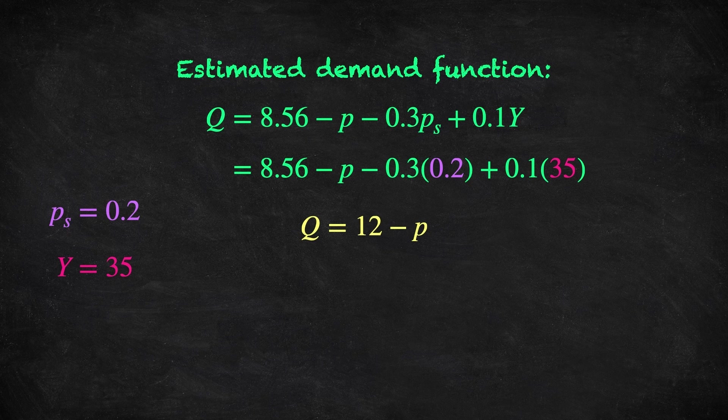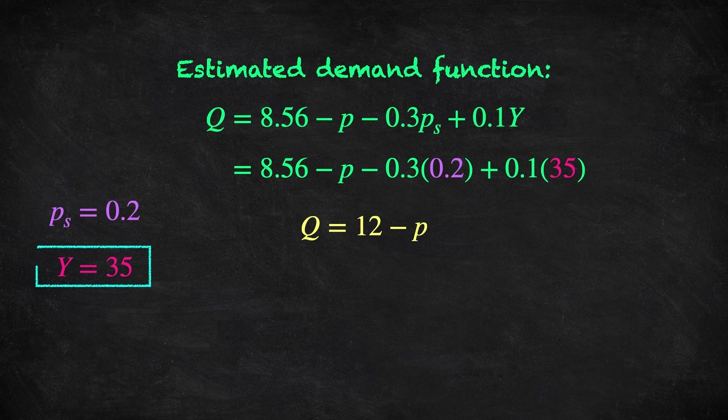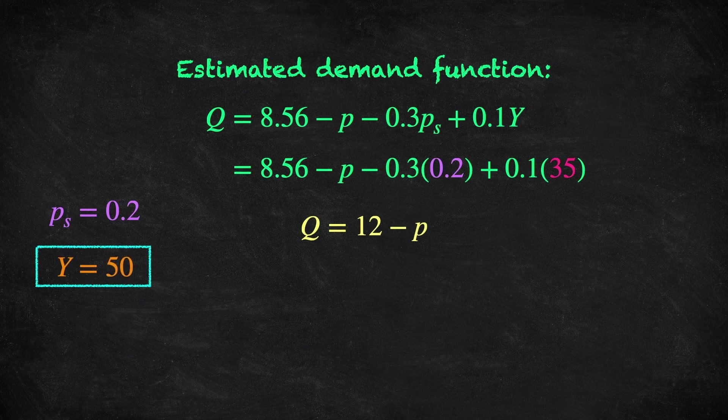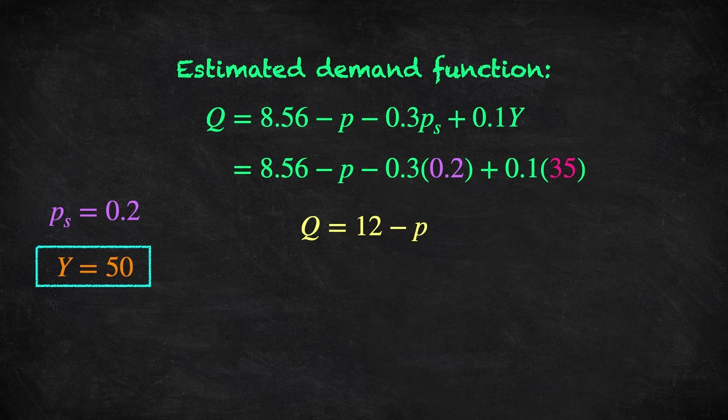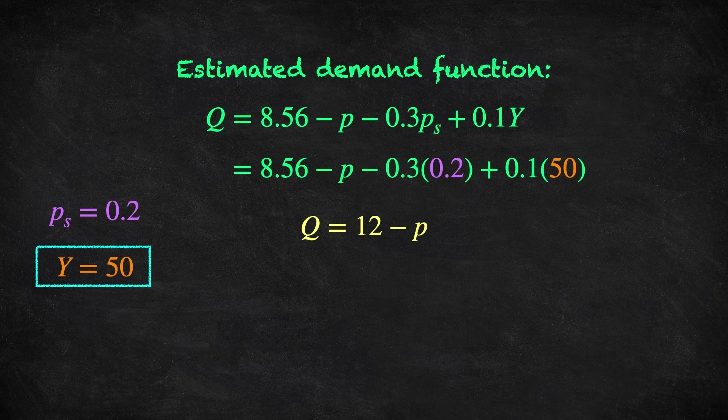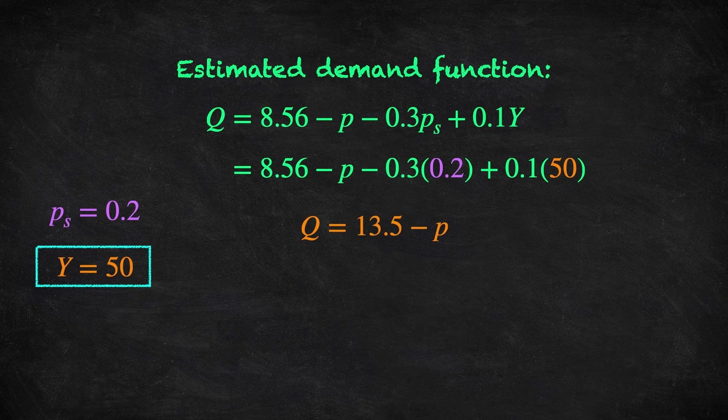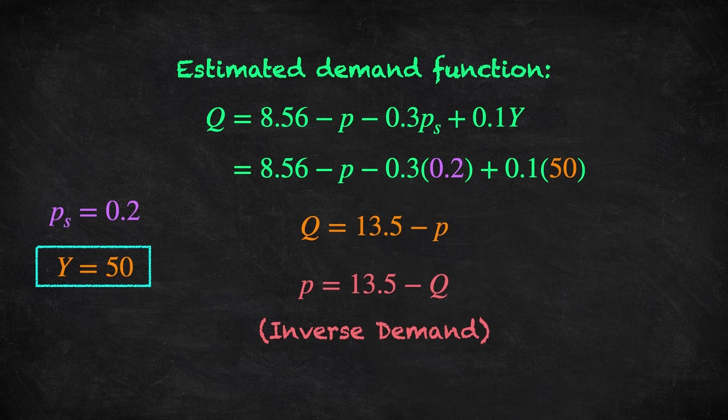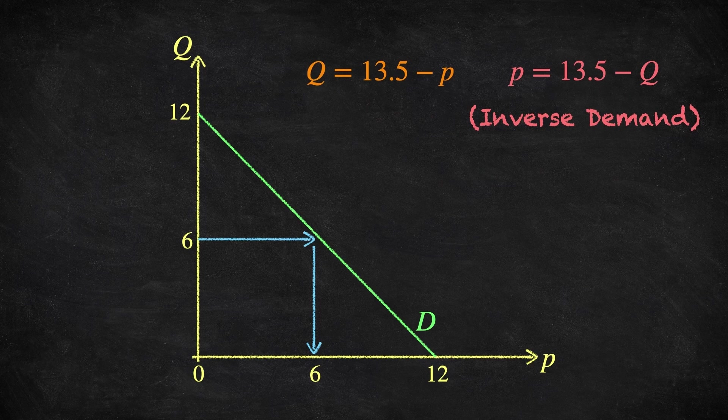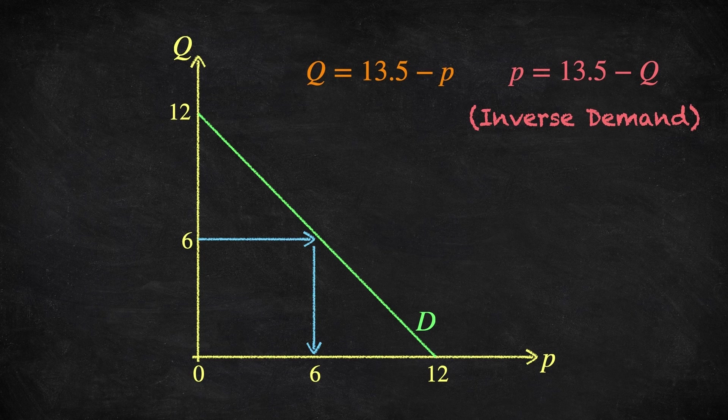Of course these are not necessarily fixed, and so what happens to this demand curve when, for example, the consumer's income changes? Well, let's suppose that income increases from 35 to 50. Then we can produce a new demand curve, using the same idea as before, but plugging in 50 instead of 35. The new demand function is Q equals 13.5 minus P, and inverting this gives the price is equal to 13.5 minus demand, and we see that the intercept term has increased from 12 to 13.5, and the slope, which is minus 1, hasn't changed.